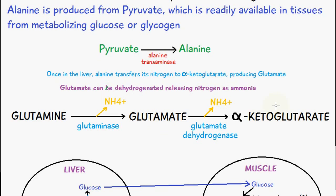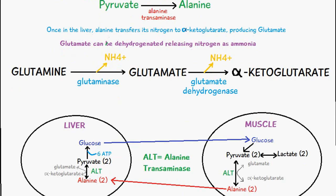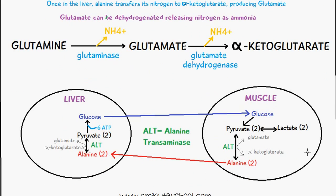Once in the liver, alanine transfers its nitrogen to alpha-ketoglutarate, producing glutamate. Glutamate can be dehydrogenated, releasing nitrogen as ammonia. Glutamine is converted into glutamate via the enzyme glutaminase, and NH4+ is removed. Glutamate is then converted into alpha-ketoglutarate, with NH4+ removed again, catalysed by the enzyme glutamate dehydrogenase. This is what happens in the liver, as shown in the diagram of the exchange.